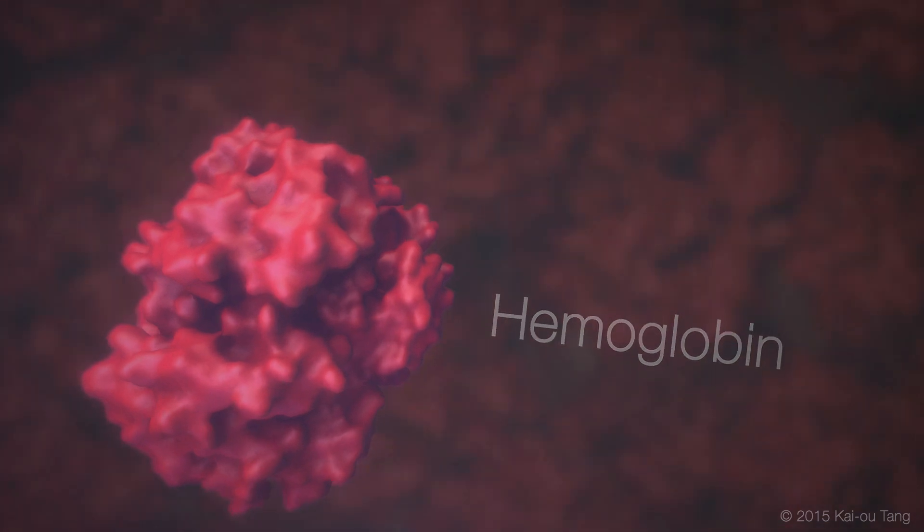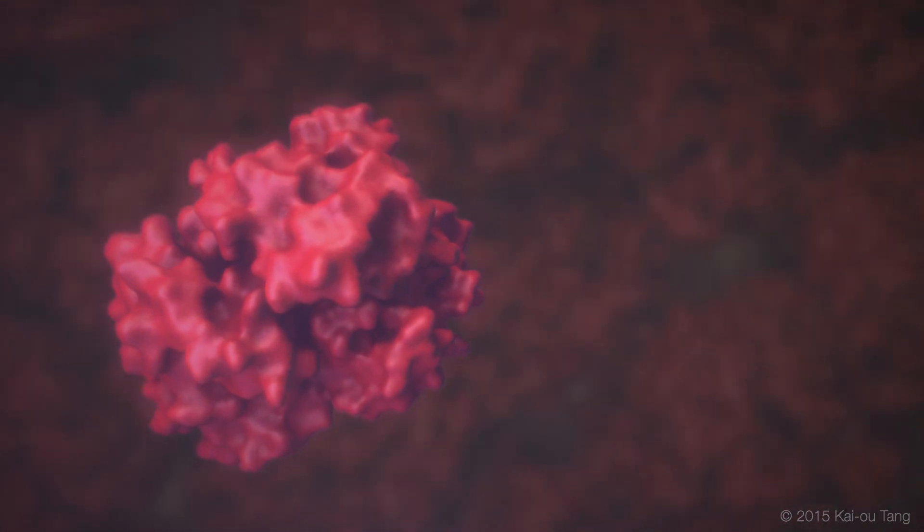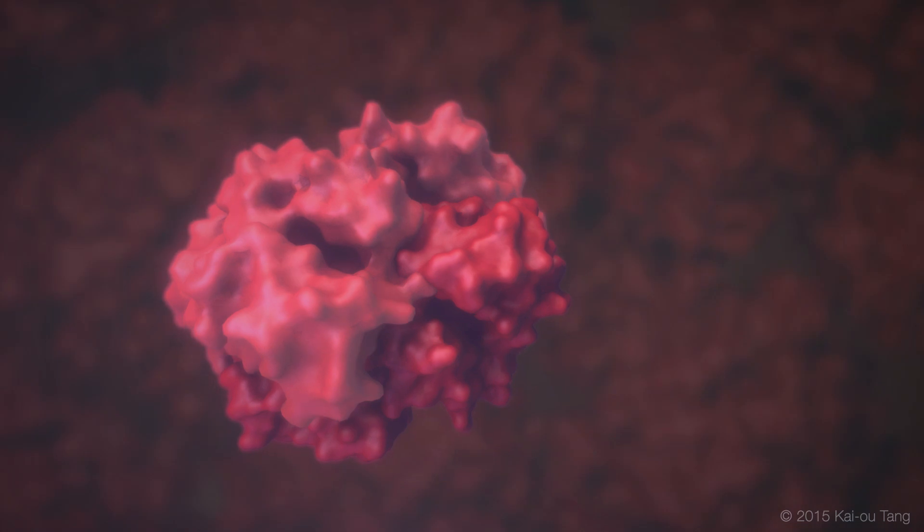Hemoglobin is formed from two types of protein subunits, two alpha-globins and two beta-globins.